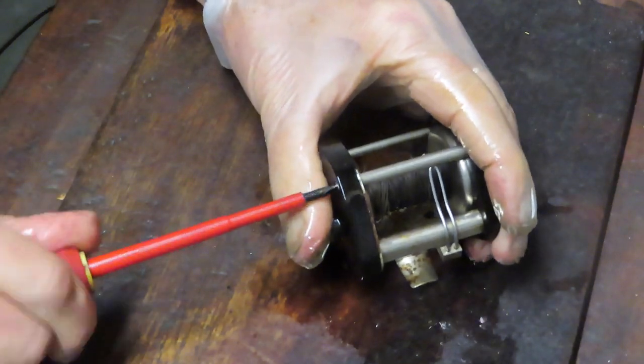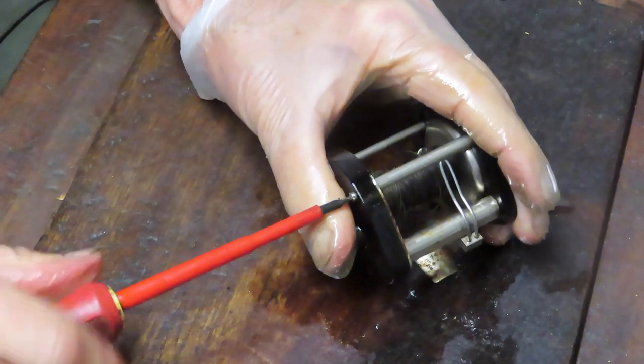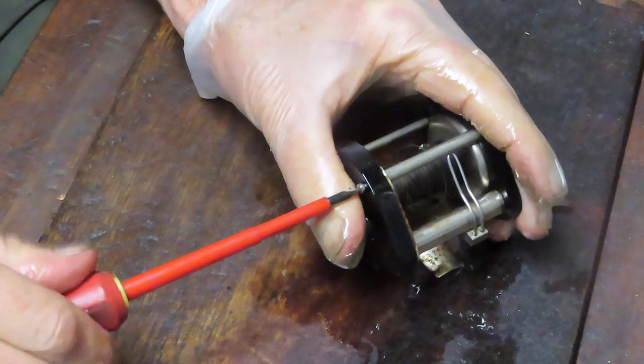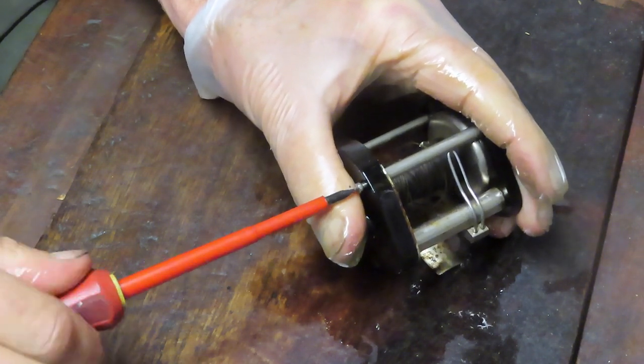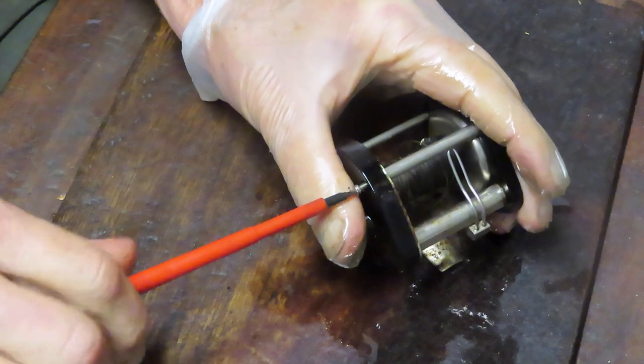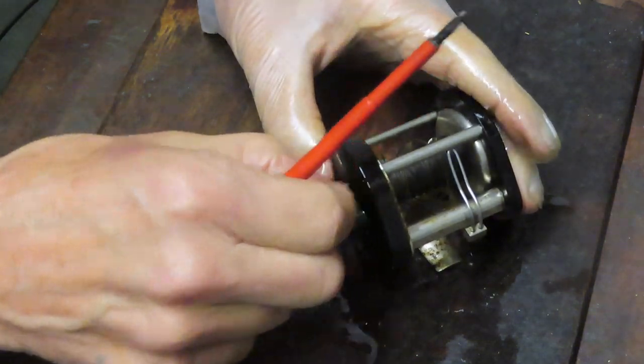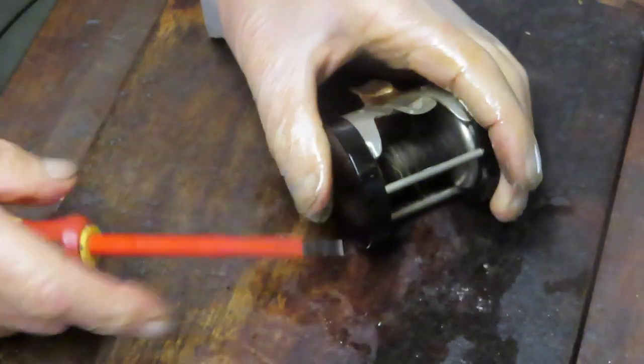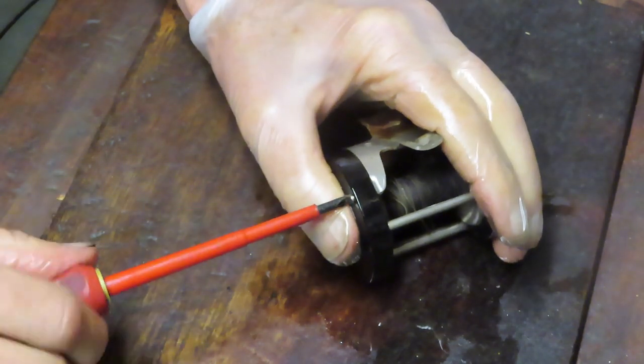Sometimes it's just going to be swollen on the posts and you can't do anything about it. We're just going to flood that with the penetrating oil and let it sit. Next up then we're going to remove the gear side plate. One of the things about these reels was the simplicity.